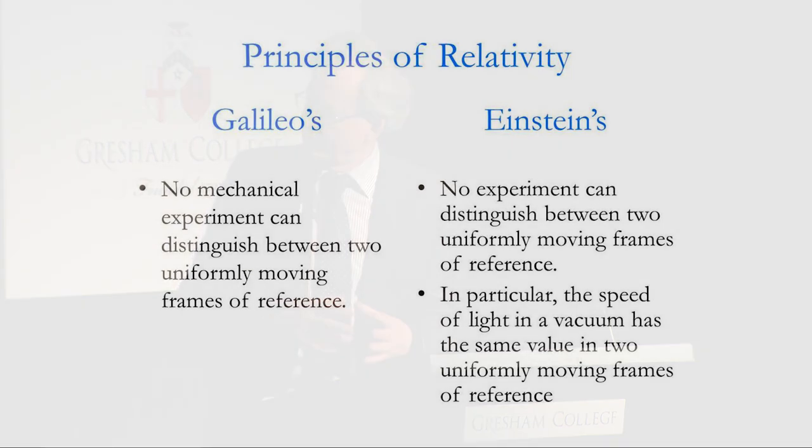There's Einstein's principle of relativity. He argued that Maxwell's equations describing electromagnetic radiation — and light is just a form of electromagnetic radiation — apply as they stand to any uniformly moving frame of reference, for example on the ship or on the shore. So in particular, from theoretical grounds, the speed of light is related to the ratio between the strength of the electric field and the strength of the magnetic field. You on the ship will find the same value as I on shore — we'll both have the same value for the speed of light. A consequence of Einstein's principle of relativity is that the speed of light in a vacuum has the same value in any two uniformly moving frames of reference.